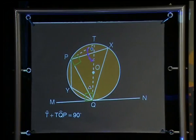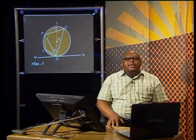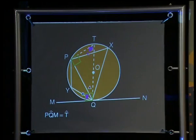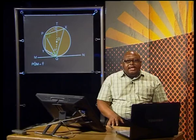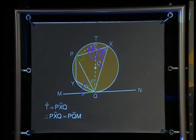This uses the theorem that states the angle subtended at the center equals twice the angle at the circumference. Now look at triangle QPT. If angle QPT is 90 degrees, then the sum of the other two angles in the triangle will also be 90 degrees, using the sum of angles in a triangle. So the angle at T plus angle TQP equals 90 degrees. This gives us angle PQM equals angle T. Now it's an easy step from angle T to angle PXQ — they are angles in the same segment subtended by PQ, so they are equal. That leads to the conclusion: angle PXQ equals angle PQM — the angle in the alternate segment equals the angle between the chord and the tangent.